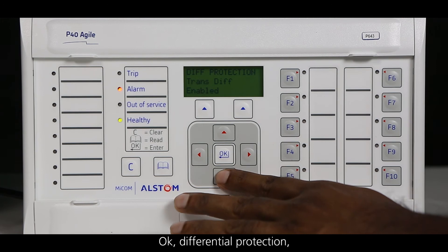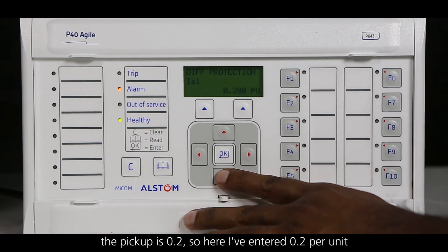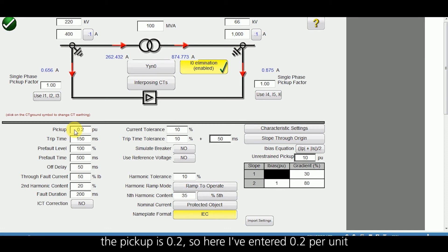Differential protection, the pickup is 0.2. So here I have entered 0.2 per unit.